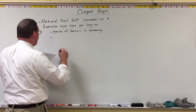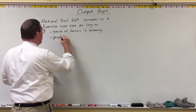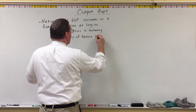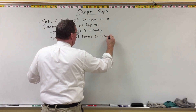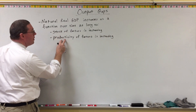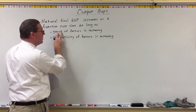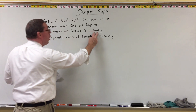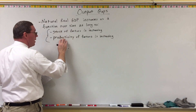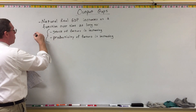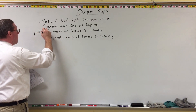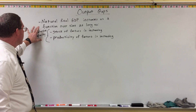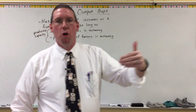Also, natural real GDP increases if the productivity of our factors of production is increasing — the productivity of land, labor, and capital. These two things together represent the quality and the quantity of our factors of production. If the factors of production in our economy are getting larger in number and in quality, then our productive capacity increases, and natural real GDP — how much we can produce — will increase.